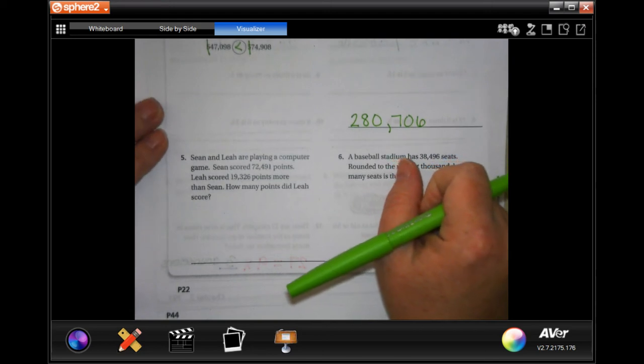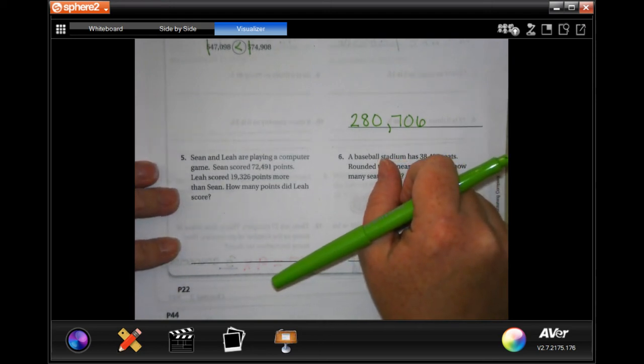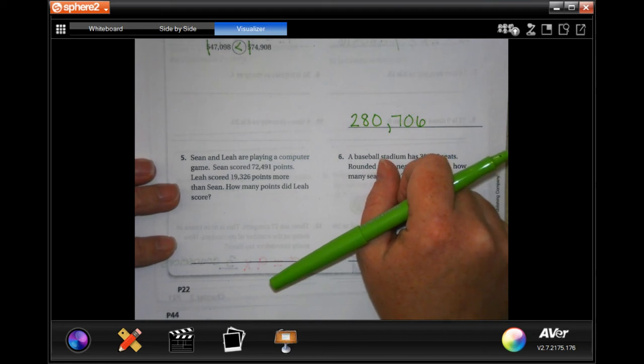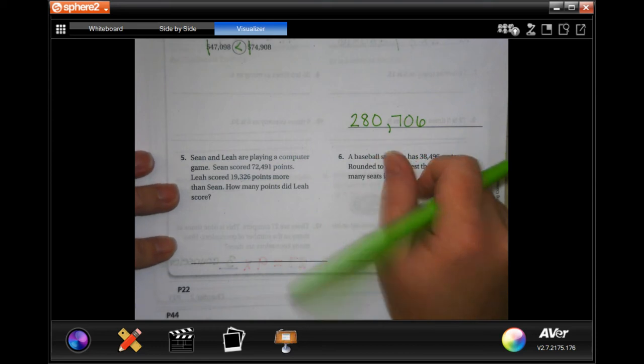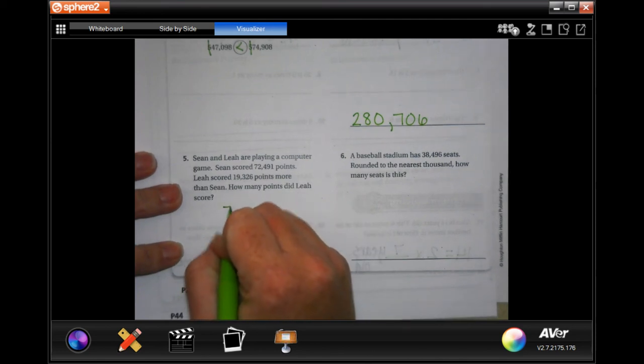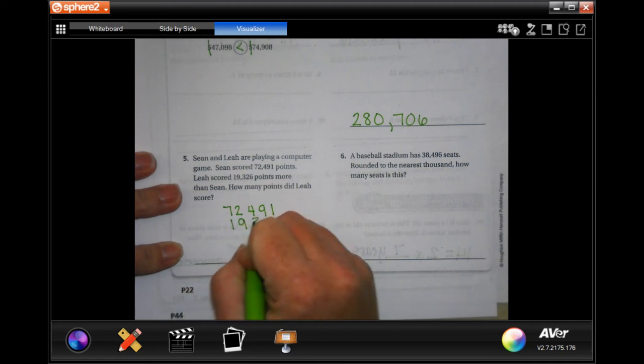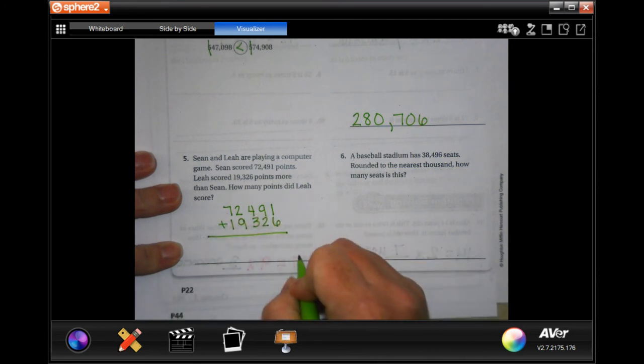Sean and Leah are playing computer games. Sean scored 72,491 points. Leah scored 19,326 points more than Sean. How many points did she score? Well this is going to be pretty simple because all we have to do is add them up. So 72,491 and 19,326. And it's going to be that many points. Have to label. Word problem, word answer guys.